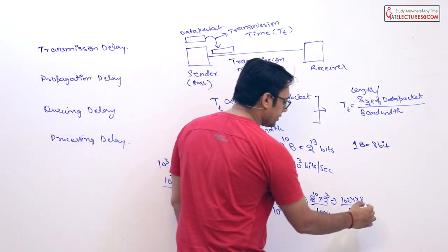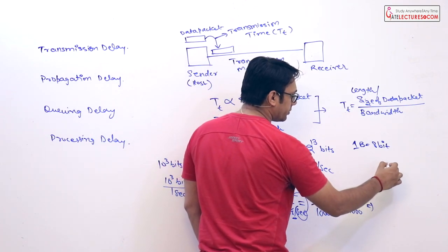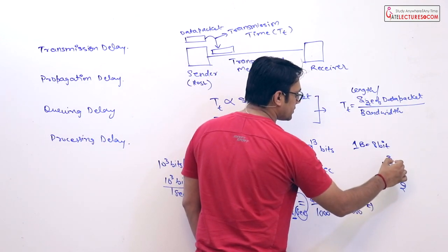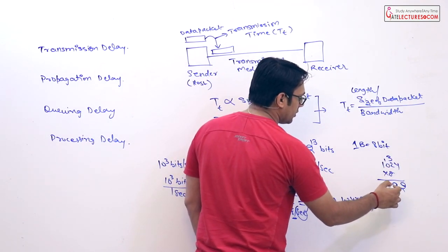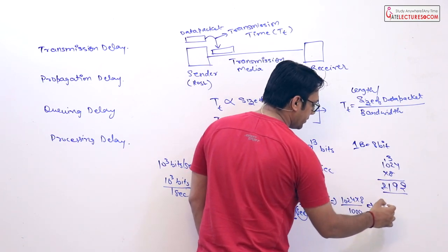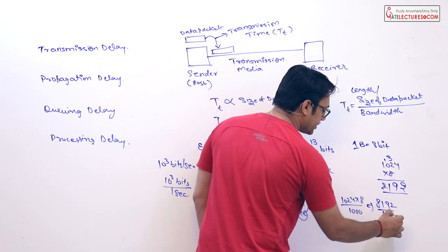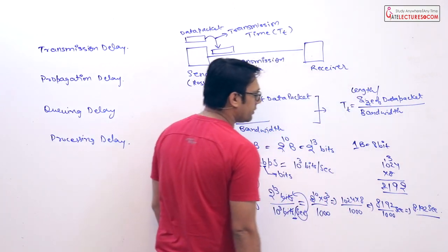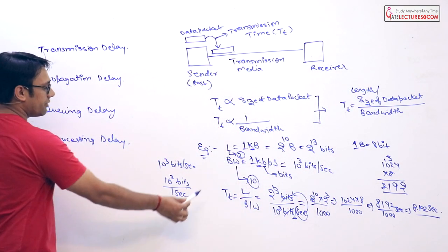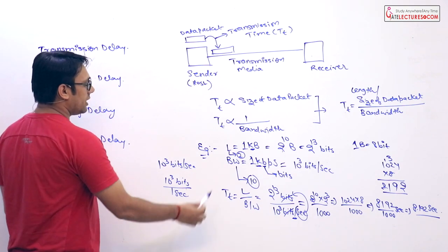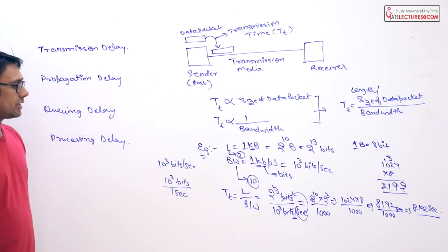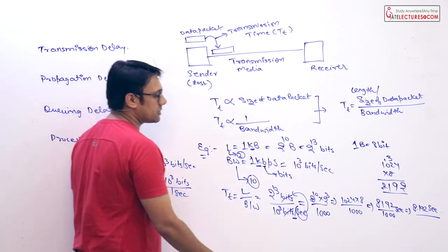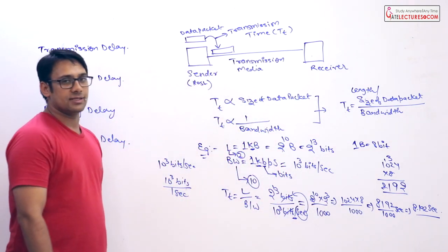So 8192 divided by 1000 equals 8.192 seconds. Therefore, when the bandwidth is 1 kbps and the length of the data packet is 1 kilobyte, the transmission time is 8.192 seconds.